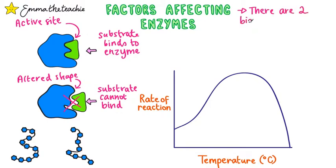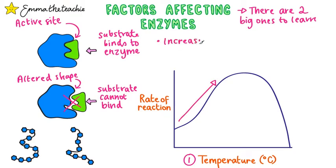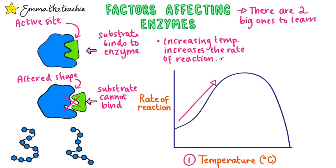There are two factors that can alter the shape of the active site and therefore affect enzyme function. The first is temperature. Increasing the temperature will increase the rate of reaction because the enzyme and substrate molecules have more kinetic energy, resulting in more successful collisions and therefore more reactions.